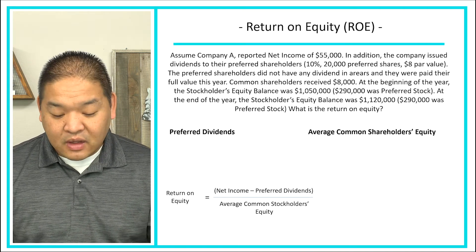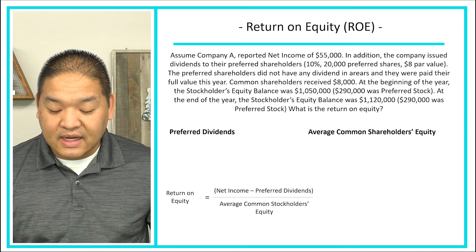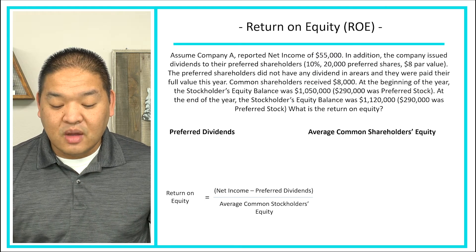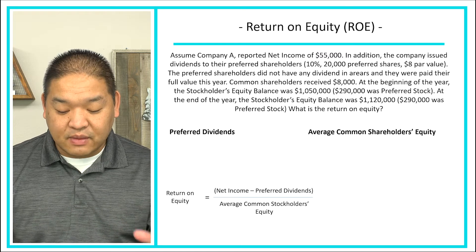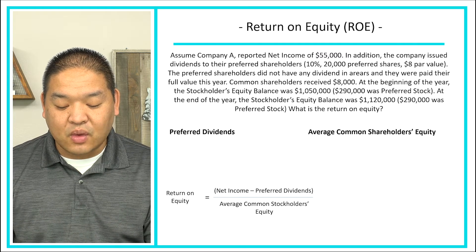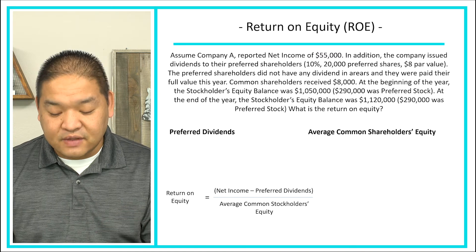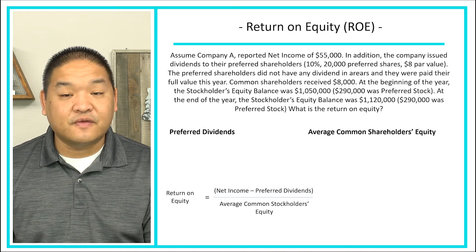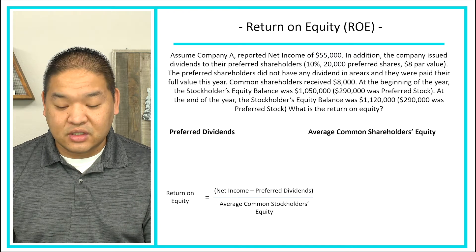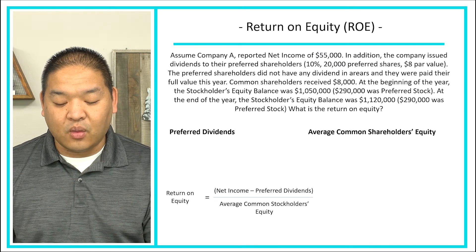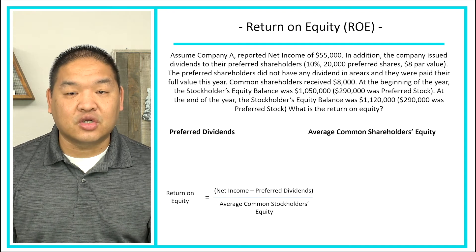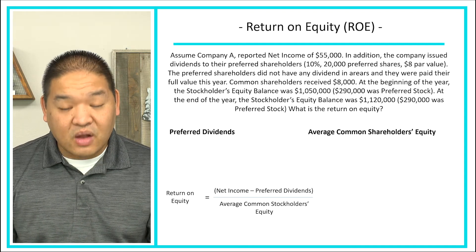Let's look at an example. Assume Company A reported net income of $55,000. The company also issued preferred shares. At the beginning of the year the total shareholders' equity balance was $1,050,000, of which $290,000 was preferred stock. At the end of the year the equity balance was $1,120,000 and $290,000 of that was still preferred stock. We need to find the return on equity.